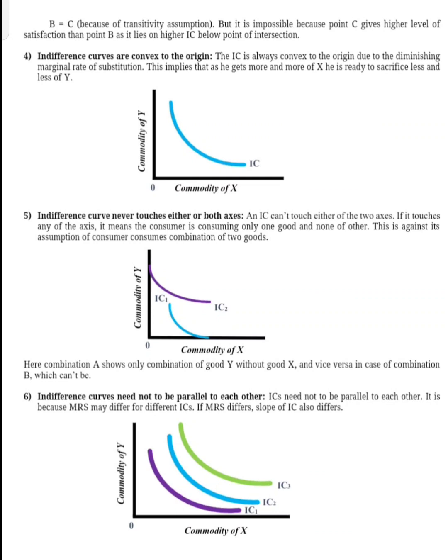Another property is that the indifference curve never touches either or both axes. If it touches any of the axes, it means the consumer is consuming only one good and none of the other, which is against the assumption that the consumer consumes a combination of two goods.